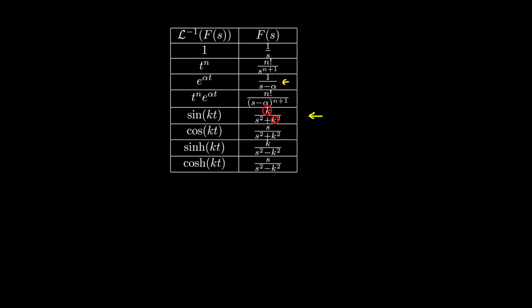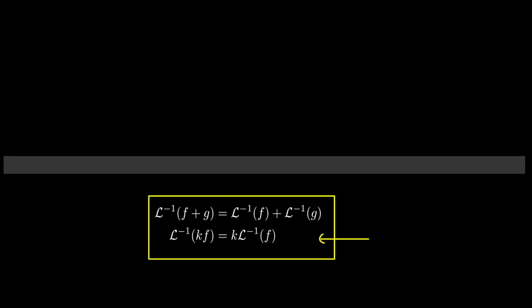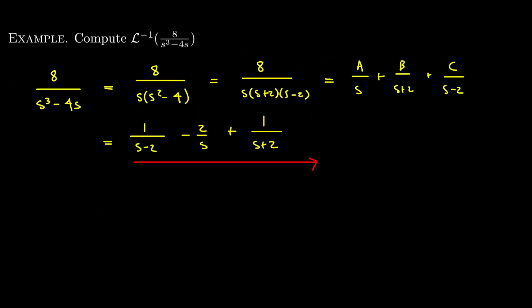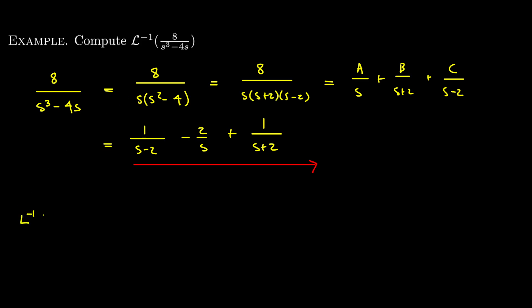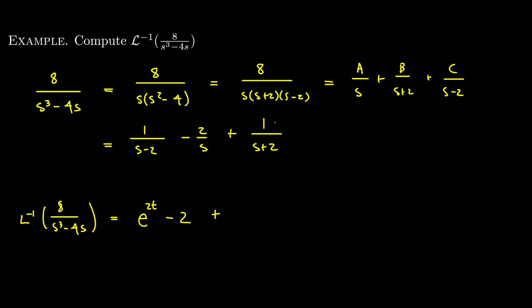This is now a linear combination of functions that appear in our table — all quotients with linear denominators. Applying the inverse Laplace transform by linearity: the inverse Laplace transform of 1/(s-2) is e^{2t}; the inverse Laplace transform of -2/s is -2 times the inverse Laplace transform of 1/s, which gives -2; and the inverse Laplace transform of 1/(s+2) is e^{-2t}. So the final answer is e^{2t} - 2 + e^{-2t}.